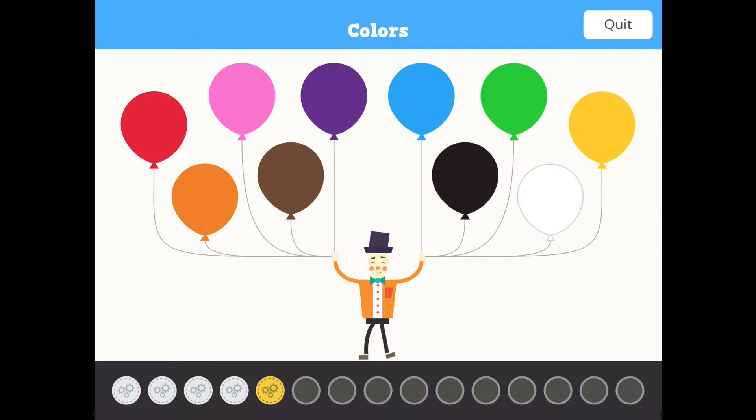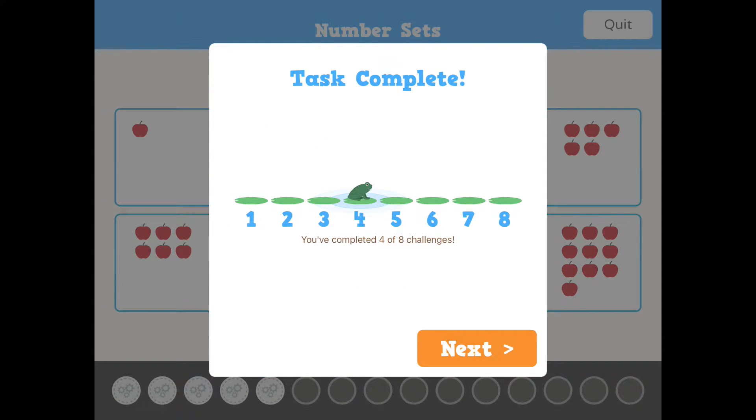The colors test is a warm-up and serves to prove that the child understands the assessment concept. If a child gets the first five wrong in a row on any skills test, the test stops and the assessment app moves on to the next subtest. A frog jumps from one lily pad to the next, indicating progress and motivating kids to continue.